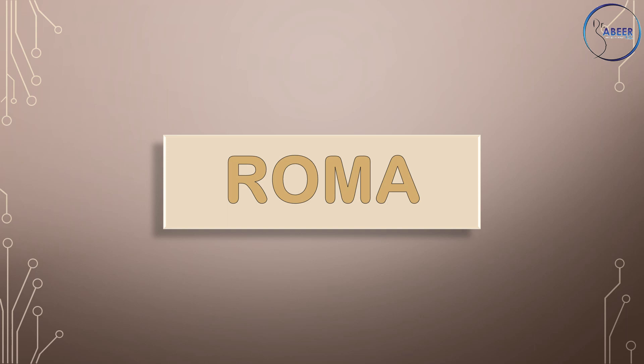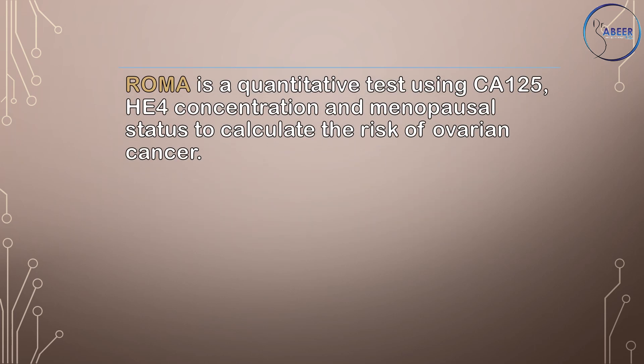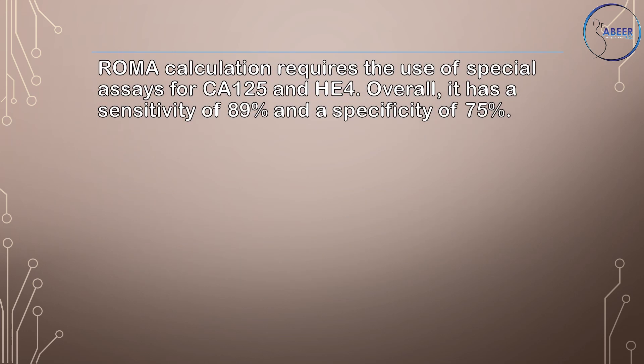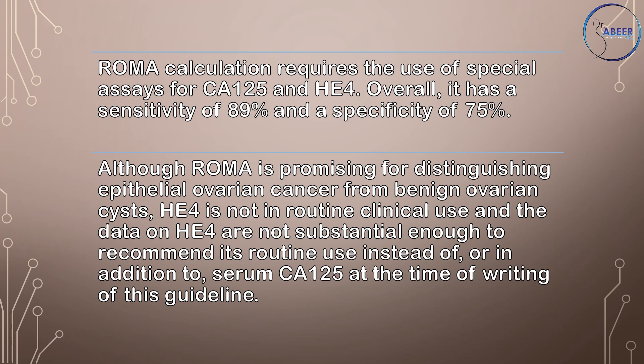Risk of Malignancy Algorithm, or ROMA. ROMA is a quantitative test using CA-125 and HE4 concentration and menopausal status to calculate the risk of ovarian cancer. A numerical score is obtained based on an algorithmic equation calculation with a cut-off value of 2.27 representing a high risk of malignancy. ROMA calculation requires the use of special assays for CA-125 and HE4. Overall, it has a sensitivity of 89% and a specificity of 75%. Although ROMA is promising for distinguishing epithelial ovarian cancer from benign ovarian cysts, HE4 is not in routine clinical use, and the data on HE4 are not substantial enough to recommend its routine use instead of, or in addition to, serum CA-125 at the time of writing of this guideline.